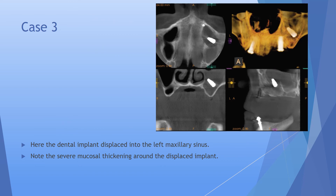Case 3 shows an implant displaced into the left maxillary sinus. The implant has slipped into the sinus cavity, which warrants surgical removal, and there is mucosal thickening around the displaced implant as well.